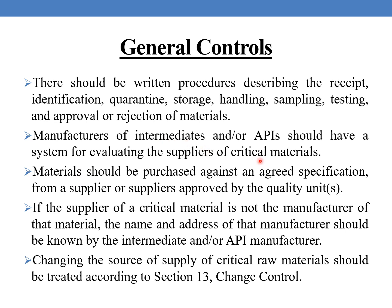Manufacturers of intermediates and/or APIs should have a system for evaluating the suppliers of critical materials. Materials should be purchased against an agreed specification from a supplier or suppliers approved by the quality unit. If the supplier of a critical material is not the manufacturer of that material, the name and address of that manufacturer should be known by the intermediate and/or API manufacturer.